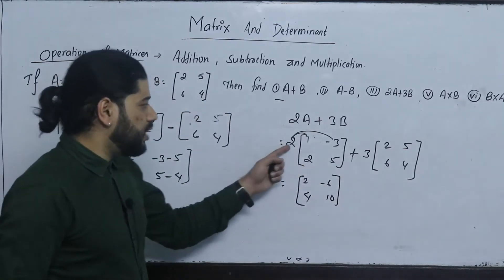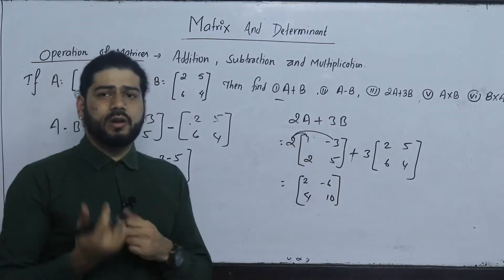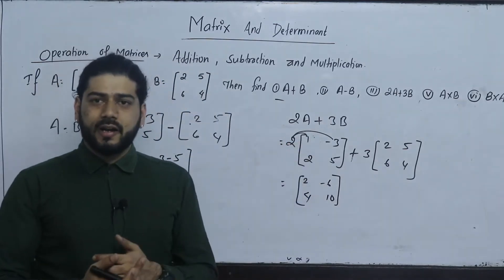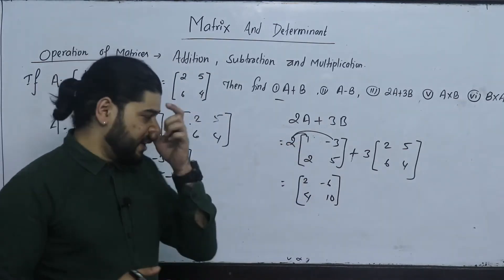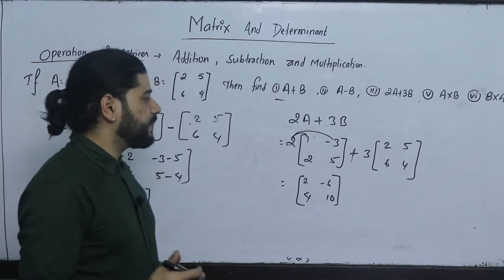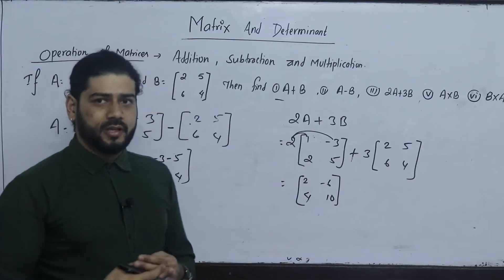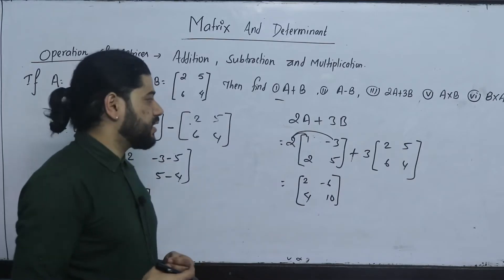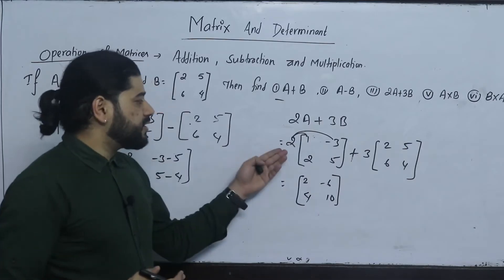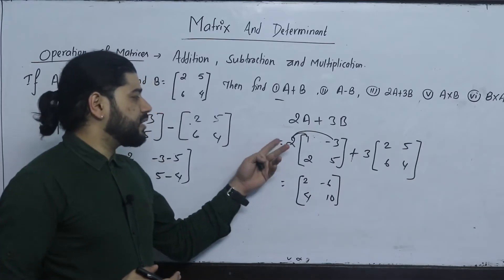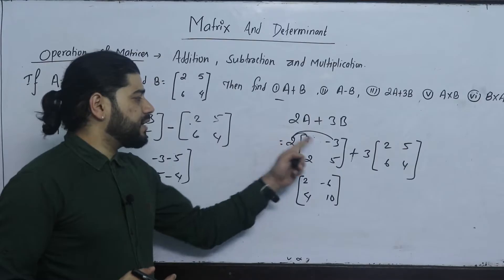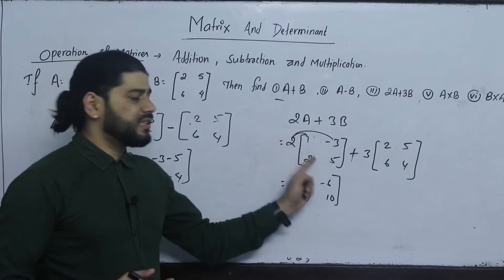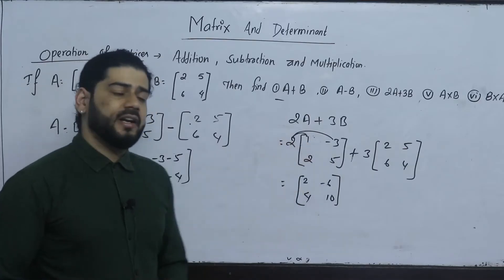Now, if you get the determinant, if you multiply the row or column, we will discuss that in the next class. When the matrix is multiplied by a scalar quantity, each element is multiplied.